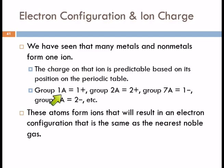The group 1A elements form plus 1 ions because in doing that, they get noble gas electron configurations. Group 2A forms 2 plus ions because if they lose 2 electrons, they get a noble gas electron configuration.